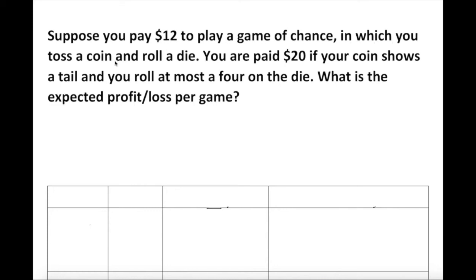In this problem, you toss a coin and roll a die — two events are going on. You are paid $20 if your coin shows a tail and you roll at most four on a die. What is the expected profit or loss of this game?